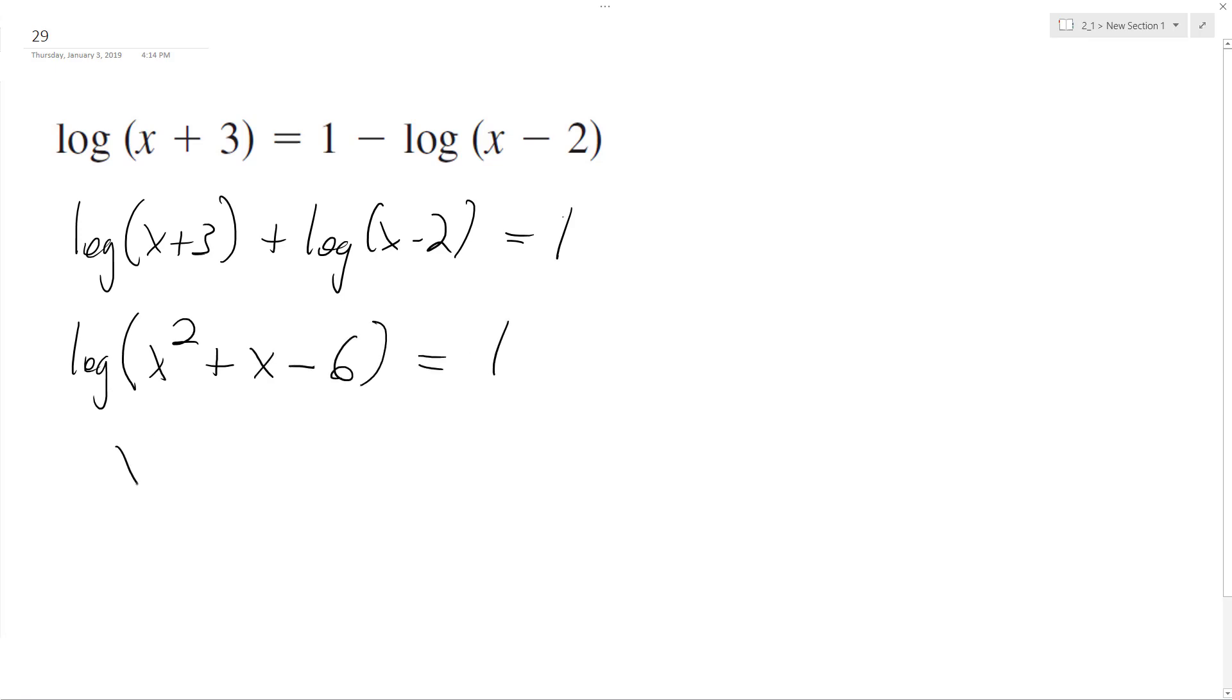Get rid of the log base 10, so this becomes x squared plus x minus six equals 10. Move the 10 over. x squared plus x minus 16 equals zero.